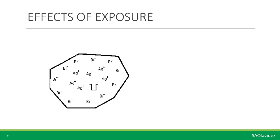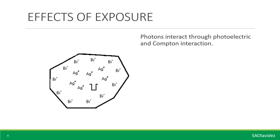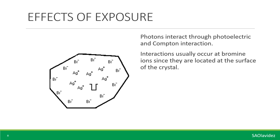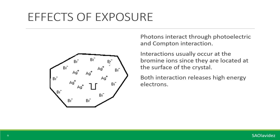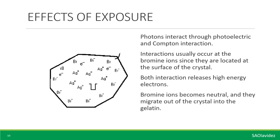In the effects of exposure, X-rays under the diagnostic energy range interact through photoelectric and Compton interaction. Interaction usually occurs at bromine ions since they are located at the surface of the crystal. Both interactions release high-energy electrons through ionization — either of the inner-shell electron in photoelectric interaction or the outer-shell electron in Compton interaction. When electrons are released from bromine ions, the bromine becomes neutral and migrates out of the crystal into the gelatin. This is possible because the gelatin has photographic properties that provide an attraction for neutral bromine.